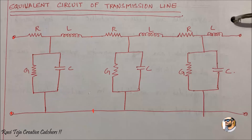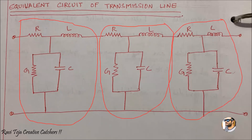An equivalent circuit of a transmission line always consists of four primary constants — a circuitry combination of resistance, inductance, conductance, as well as capacitance.